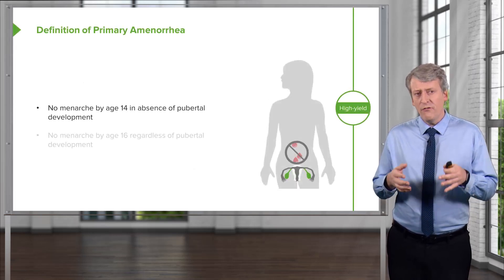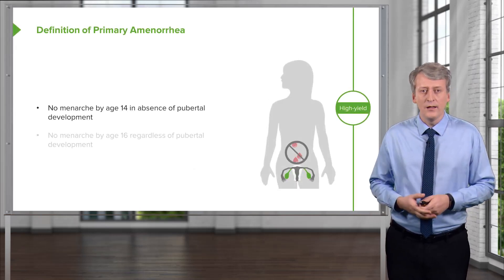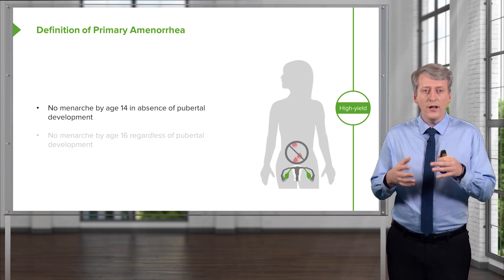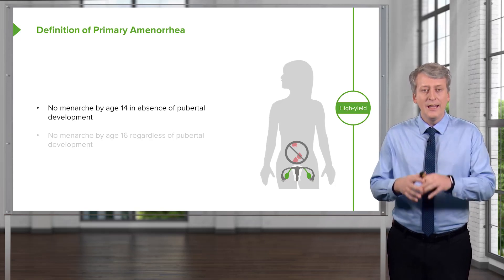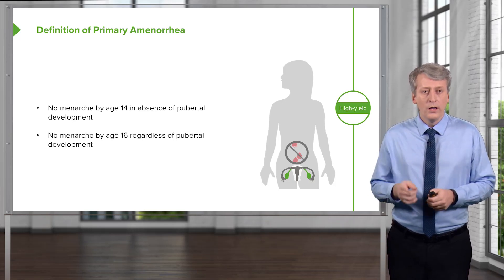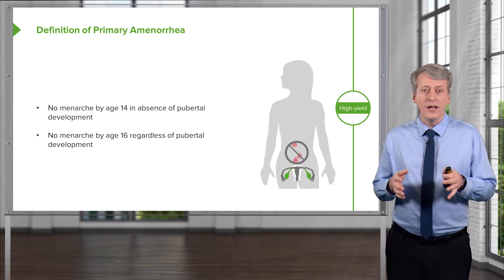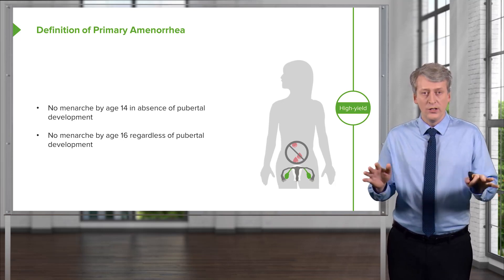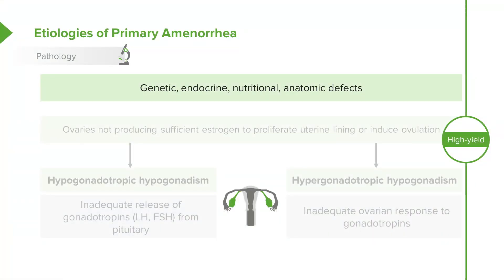The definition of primary amenorrhea is when a girl has not developed menarche by the age of 14 in the absence of pubertal development, or she hasn't developed menarche by the age of 16, regardless of whether there's pubertal development. Causes can be genetic, endocrine, nutritional, or anatomical defects.